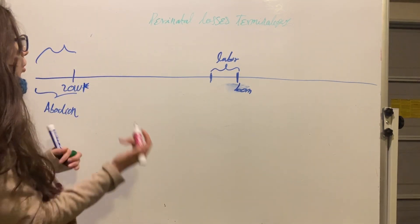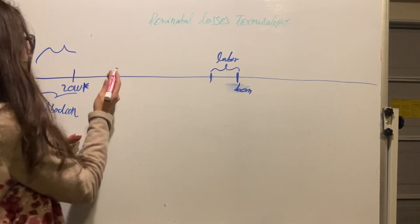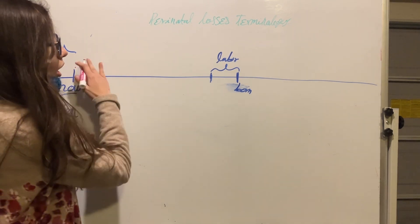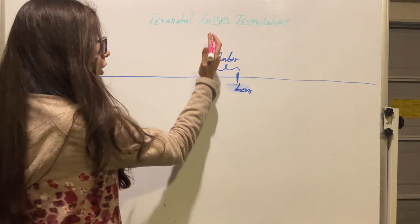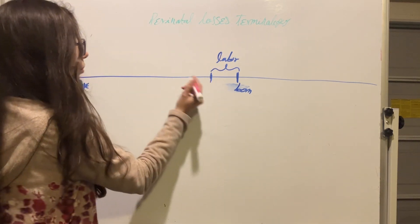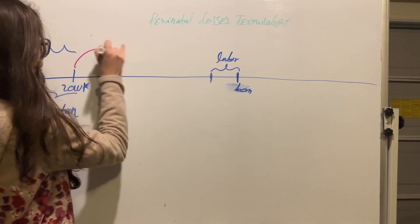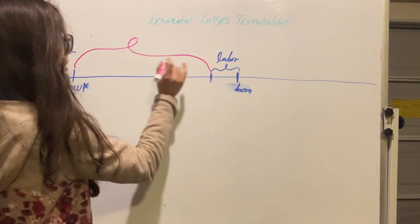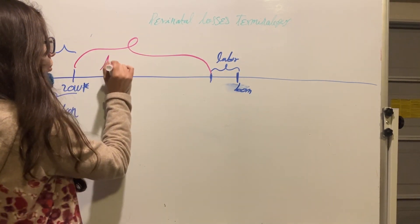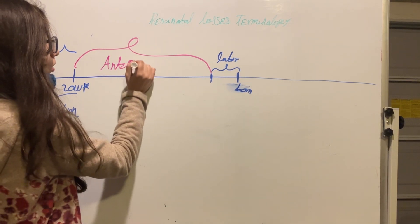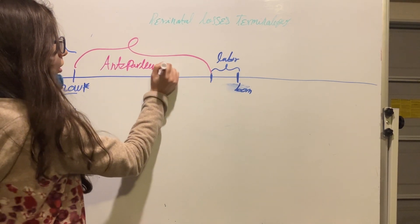If we have death of the fetus between 20 weeks up to when labor starts, this is antepartum death, between 20 weeks to when labor starts.